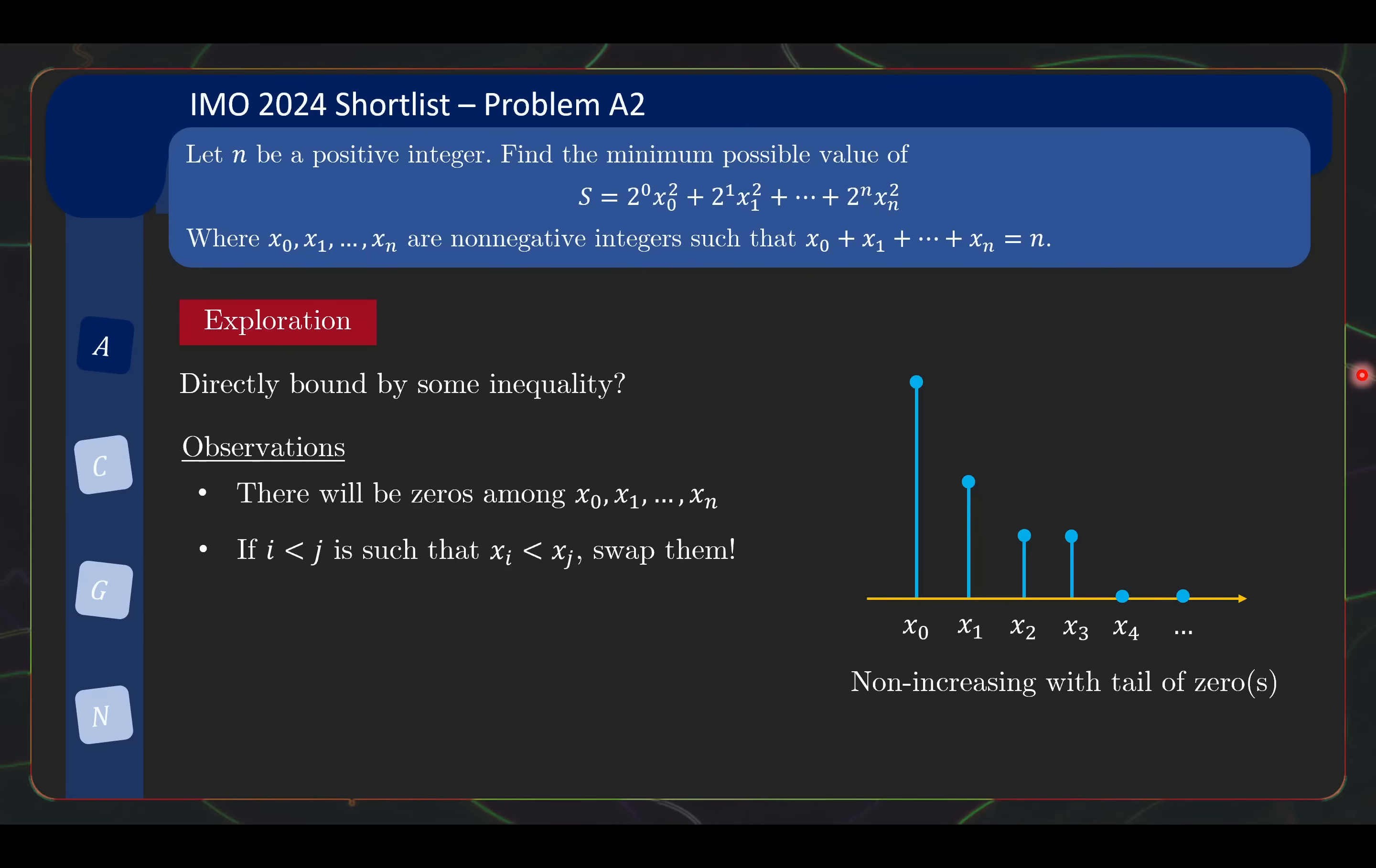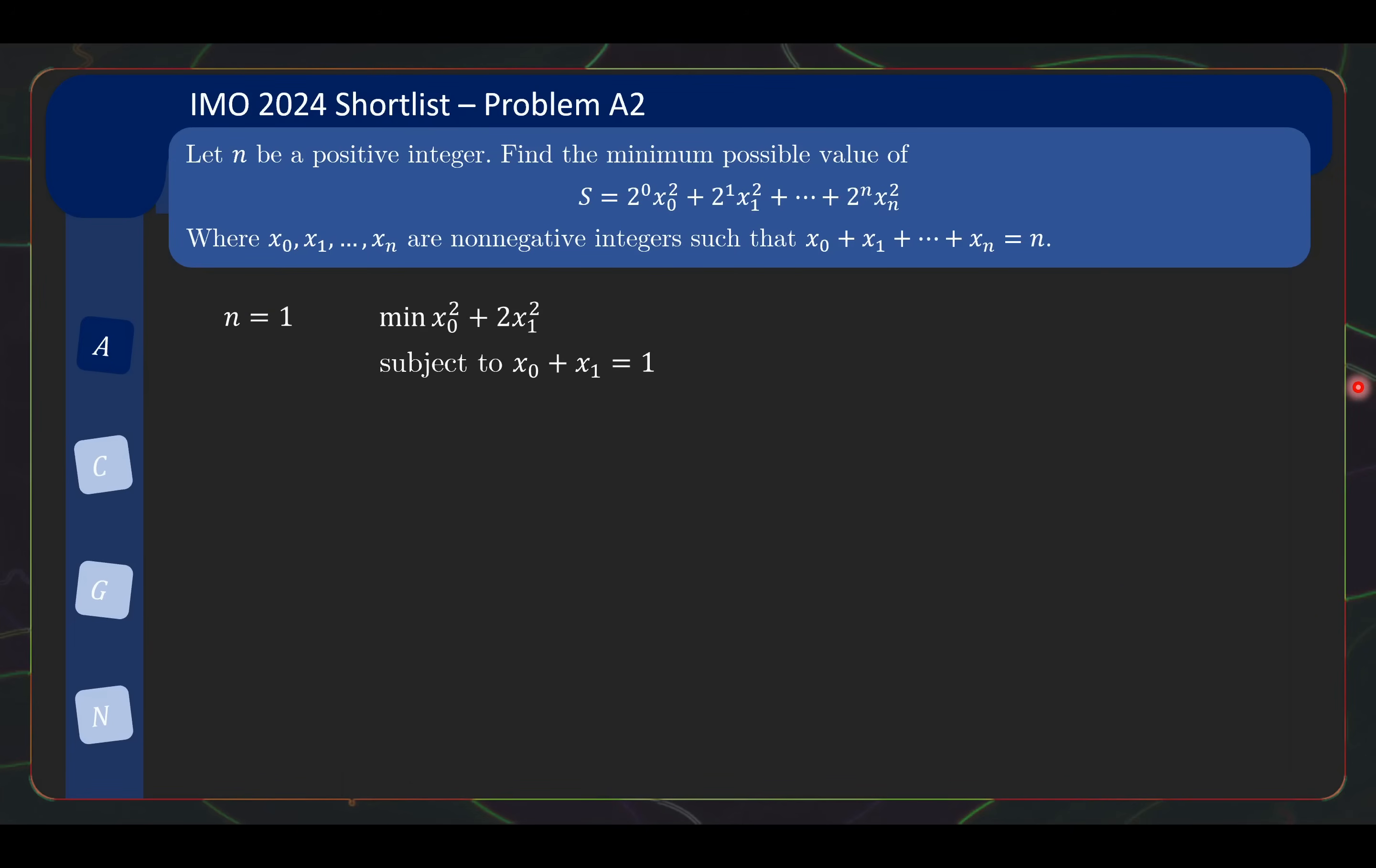Because if something on the right has a higher x value than something on the left, then we just swap the two values. They sum to the same thing, but now we place the larger value with a smaller coefficient instead. This tells us that in any optimal solution, the xi's will be non-increasing with a tail of at least one 0. You might be tempted to continue exploring, but unfortunately, if you are like me, you will spend quite long down this rabbit hole and not find anything very useful. That is when you might realize you forgot one thing about exploration - the key thing to do is always try small cases.